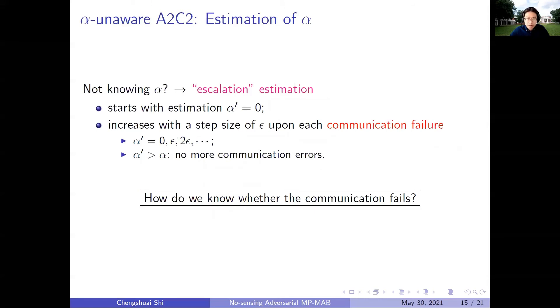So, with knowledge of the α-aware A2C2, we move forward to not knowing α and propose the α-unaware A2C2 algorithms. Without the knowledge of α, a natural idea is to perform estimation. So we design an escalation estimation scheme. It starts with the estimation α', and then the estimation only increases upon every communication failure, and it never decreases. So it's an escalation scheme. If at some time, the estimation α' is larger than the true value of α, then no communication failure will happen anymore, and the escalation stops.